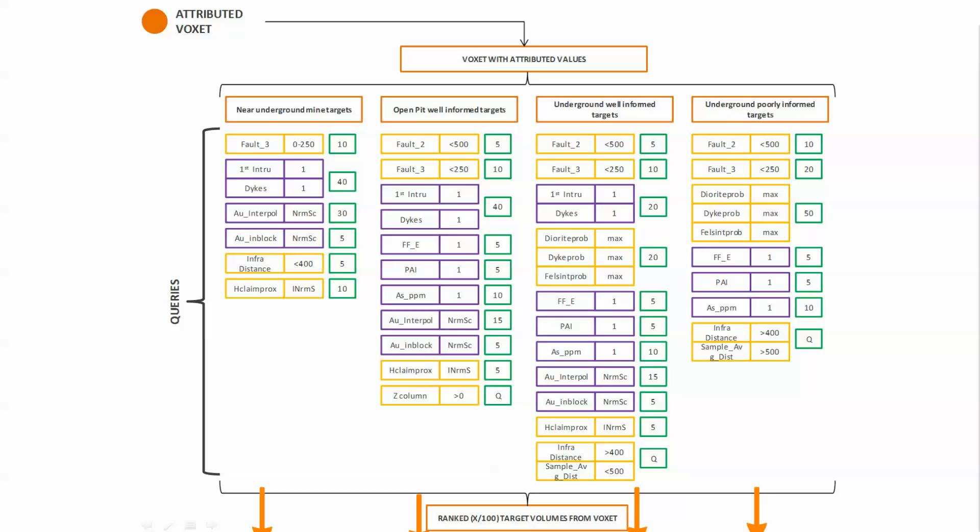Each of those parameters were weighted to get a geological knowledge prospectivity score. We used four separate weighting formulas because we recognized that most of the data is clustered around known mineralization and we did not want to handicap too heavily the distal areas.